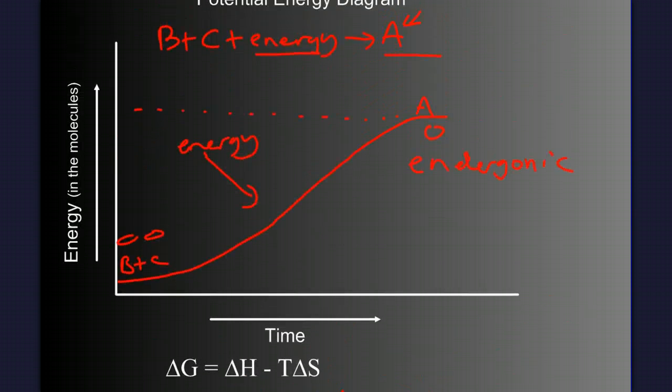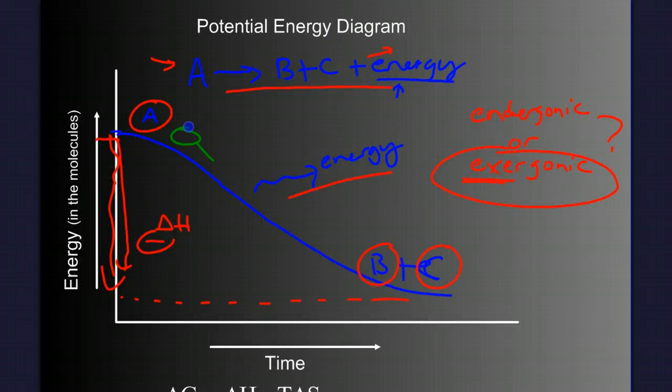Now if you just look at the shape of this graph and we think about putting a ball here, is that ball going to roll up the hill spontaneously? Probably not. But when we look at this reaction, if we put a ball here, is it going to spontaneously roll down the hill? And the answer is yes. So that kind of visually helps us to decide.